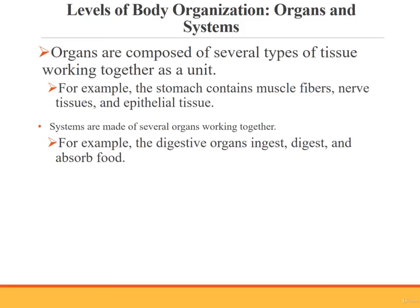Organs are made of several different types of tissues working together as a unit to perform special functions. For example, the stomach contains muscle fibers, nervous tissue, and epithelial tissue. A system is made up of several organs working together in a coordinated manner to perform complex functions. For example, the stomach plus other digestive organs, including the mouth, esophagus, liver, pancreas, small intestine, and colon work together to ingest, digest, and absorb our food.